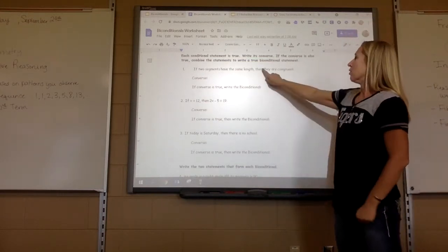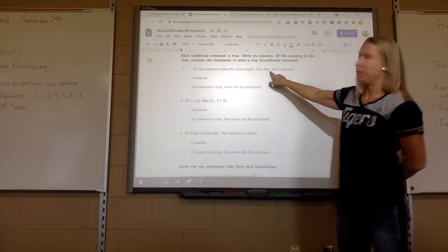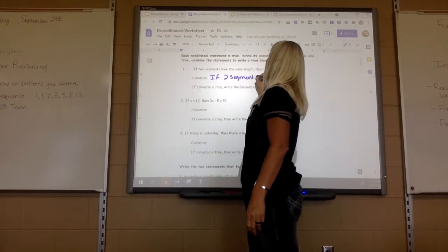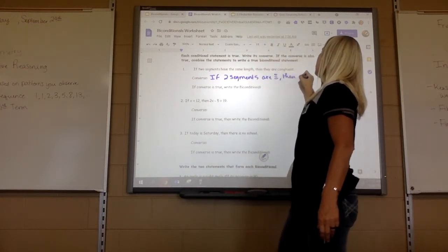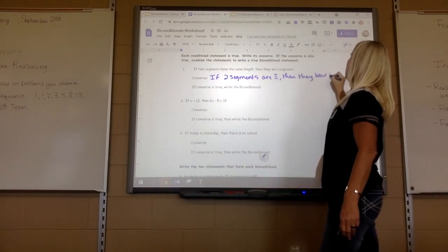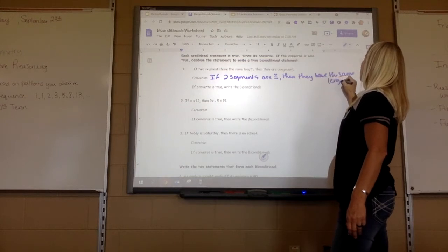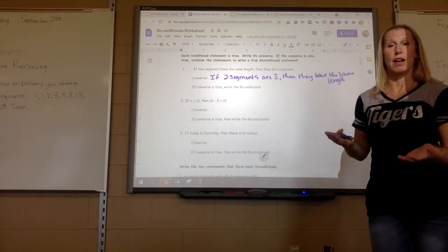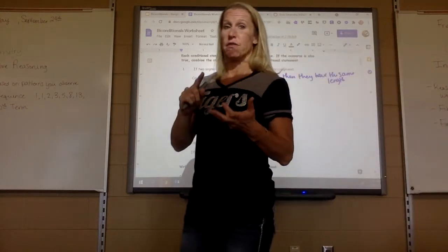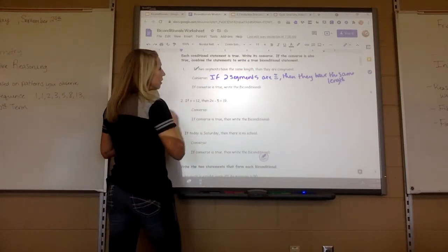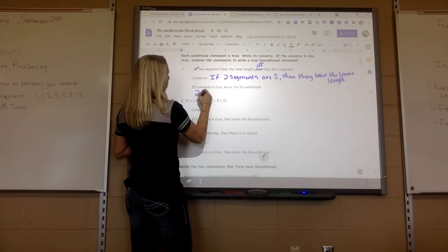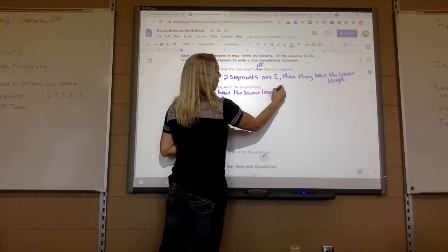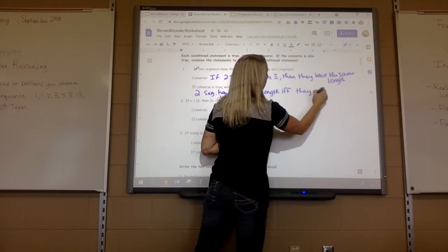The converse is just the flip. We're talking about two segments, so: if two segments are congruent, then they have the same length. Is that also a true statement? If two segments are congruent, then they have the same length — that is a true statement. So we can write a true biconditional: two segments have the same length if and only if they are congruent.